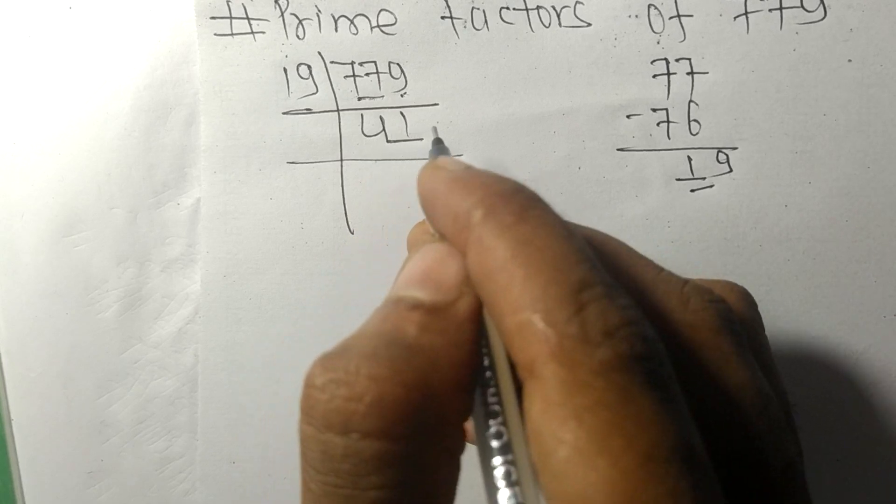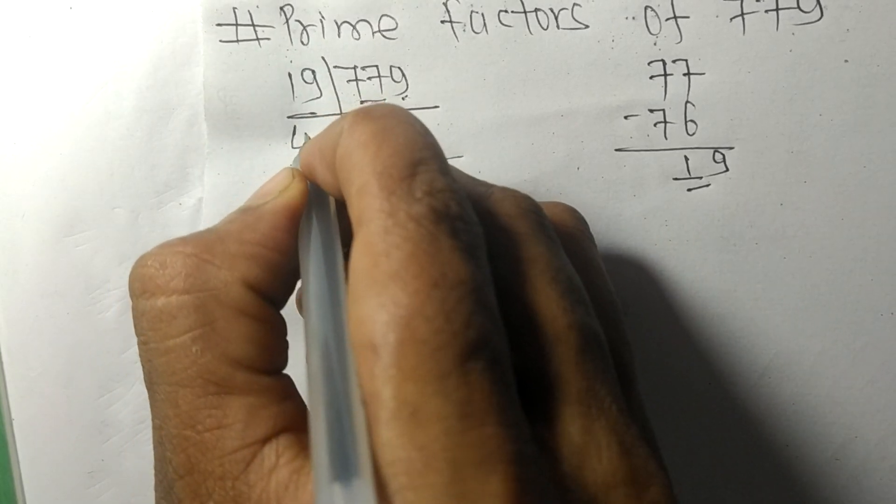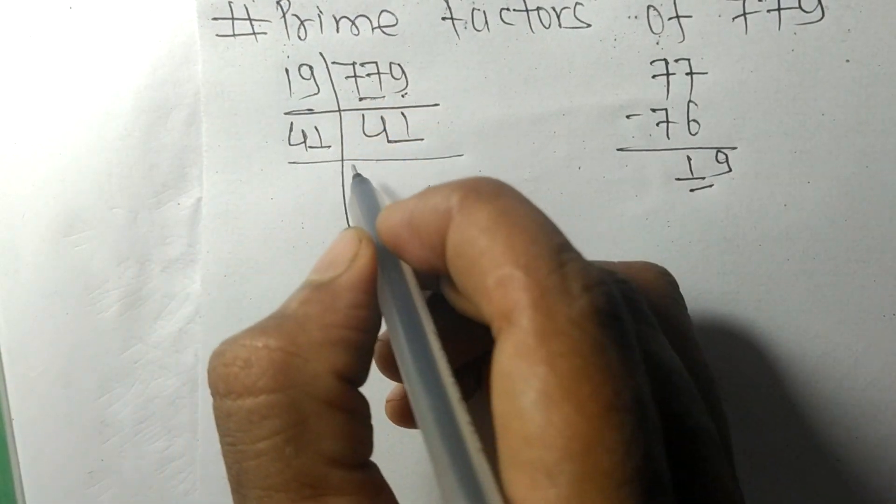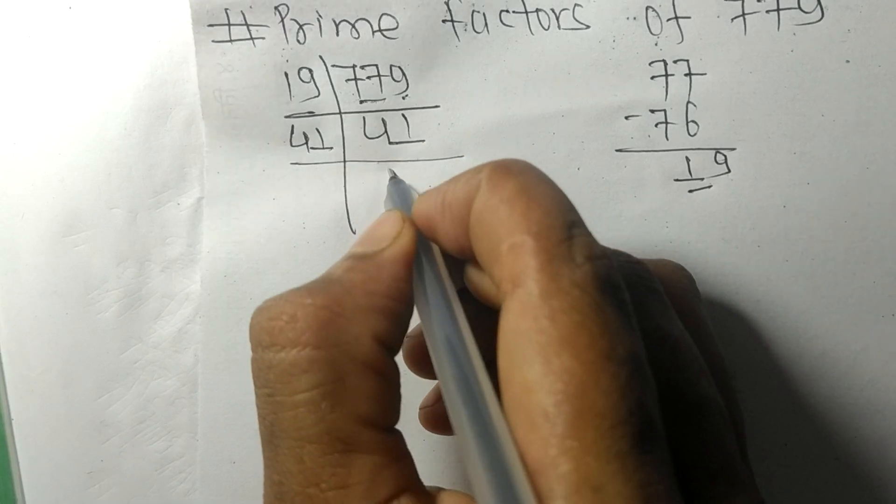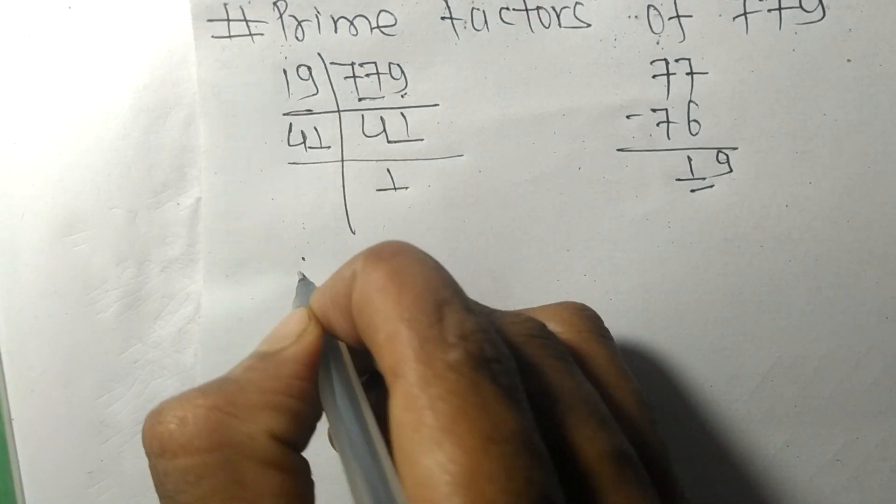So it is exactly divisible by 41 only. On dividing we get 1.